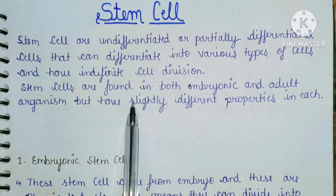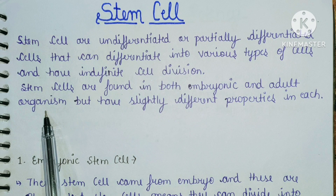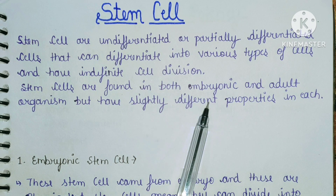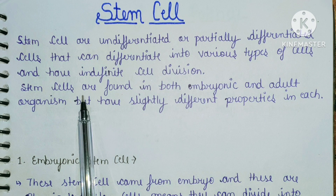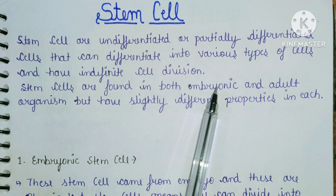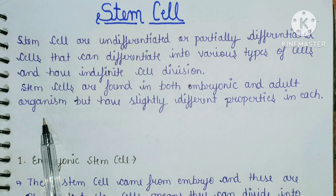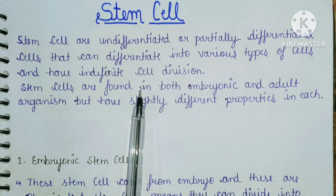Stem cells are found in both embryonic and adult organisms and have slightly different properties in each. Both types of stem cells have different properties.